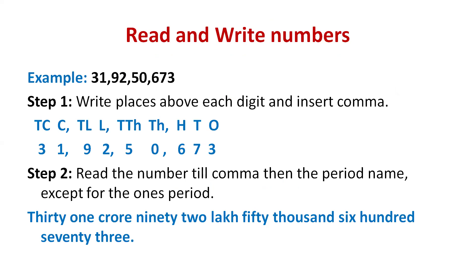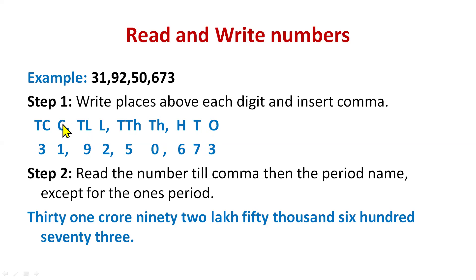Now we're going to learn about reading and writing big numbers, specifically 9-digit numbers. You just need to remember two steps. After looking at the number, write the places above each digit and insert commas. For example, for the number 31,92,50,673, we start from the right side: ones above 3, tens above 7, hundreds above 6, thousands above 0, ten thousands, lakh, ten lakh, crore, ten crore. This completes Step 1.